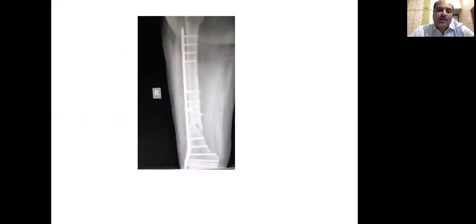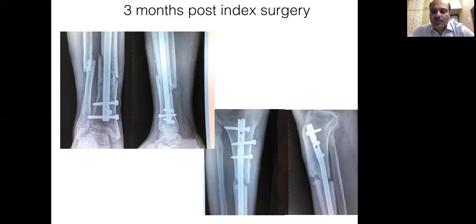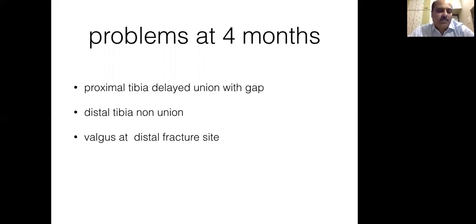These are the x-rays of the femur fixation, which is not part of my discussion today. These are the x-rays when the patient followed up at the end of 3 months — I don't have immediate post-op x-rays but they weren't much different. The distal tibial fracture is probably making an attempt to unite but is in definite valgus. The upper tibia fracture shows a gap with no sign of union, although the alignment is good. So at the end of 4 months, the problems are: proximal tibia delayed union with gap, distal tibia heading towards non-union, and valgus at the distal fracture site.